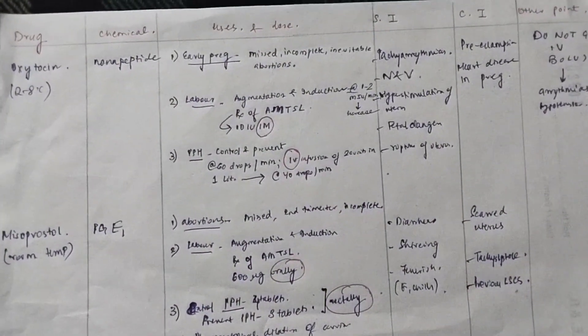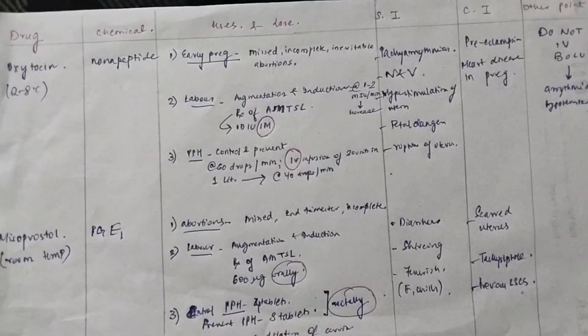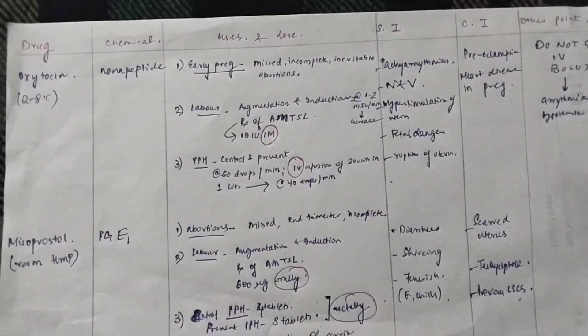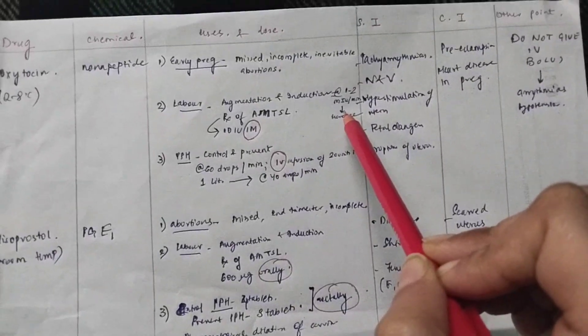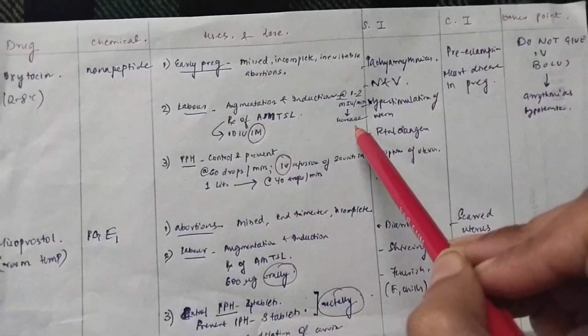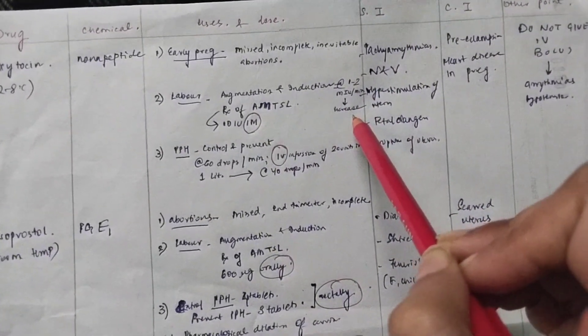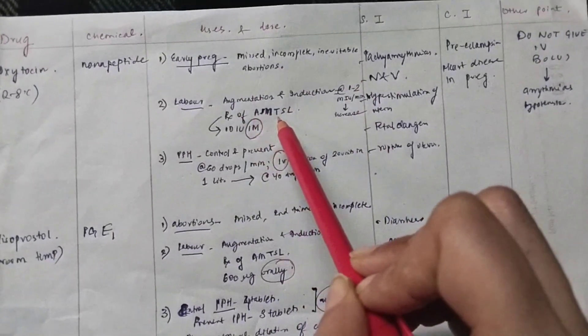They are used in labor. How? By augmentation and induction of labor. Oxytocin both important. And the dose is 1 to 2 milli international units per minute. And then you can increase the dose.